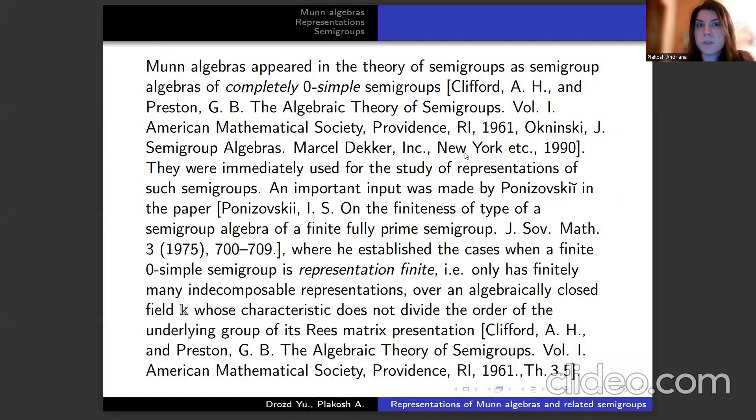Munn algebras appeared in the theory of semigroups as semigroup algebras of completely zero-simple semigroups. They were immediately used for the study of representations of such semigroups. An important input was made by Ponizovsky in the paper in 1975.